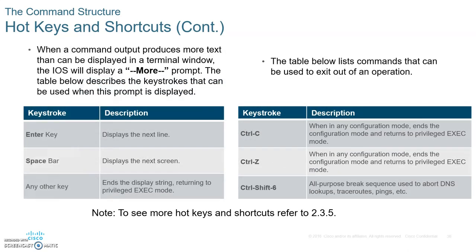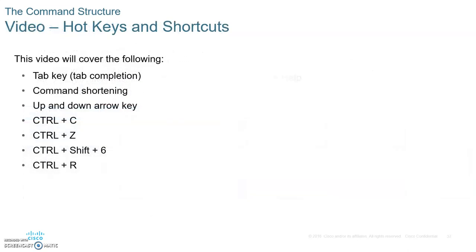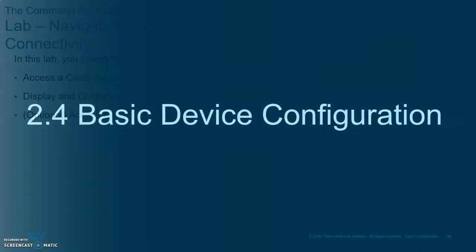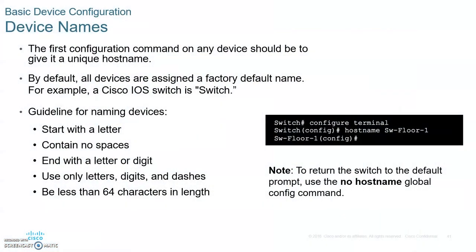For basic configuration, the first thing you do when configuring a switch or router is give it a hostname — changing the prompt from 'Switch' to the name of the location where the device is placed. Make sure you are in Global Configuration Terminal mode, then type the command 'hostname' followed by the location name. Typically, hostnames are written in capital letters.